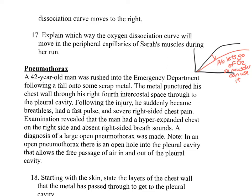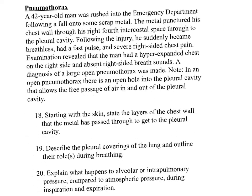The next case study is the pneumothorax. A 42-year-old man was rushed into the emergency department following a fall on scrap metal. The metal punctured his chest wall through his right fourth intercostal space into the pleural cavity. He suddenly became breathless, had a fast pulse, and severe right-sided chest pain. Examination revealed a hyper-expanded chest on the right side and absent right-sided breath sounds. A diagnosis of a large, open pneumothorax was made. In an open pneumothorax, there is an open hole into the pleural cavity that allows the free passage of air in and out.